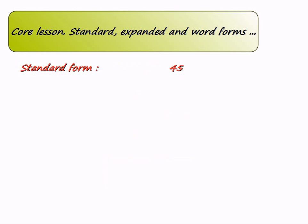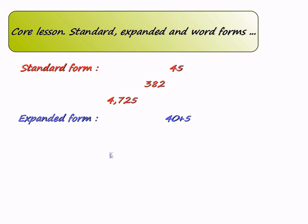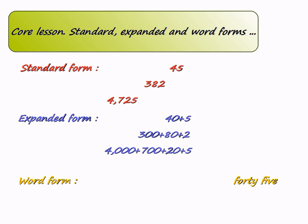Numbers can be written in standard form, which is the most common one. Another way to represent numbers is to use expanded form — it is a way to break up a number to show how much each digit represents. In other words, expanded form is a way to write numbers by adding the value of its digits. Finally, we can express any number in words by using word form.